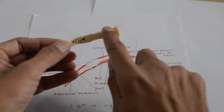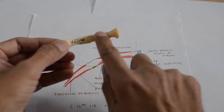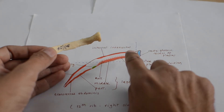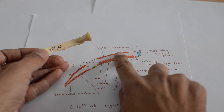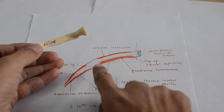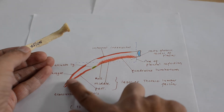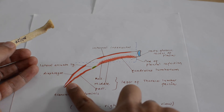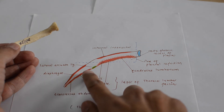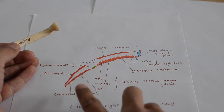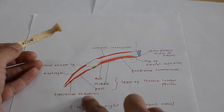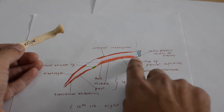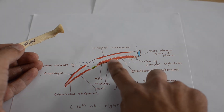Along the upper border there is attachment of the external intercostal and internal intercostal muscles. A portion of the internal intercostal muscle is also attached to the inner surface. The lateral half in the upper part provides attachment to the diaphragm, and in the lower part it provides attachment to transversus abdominis.